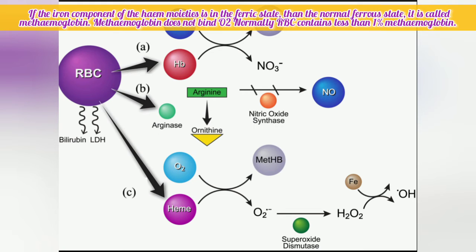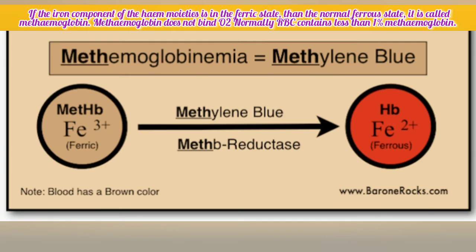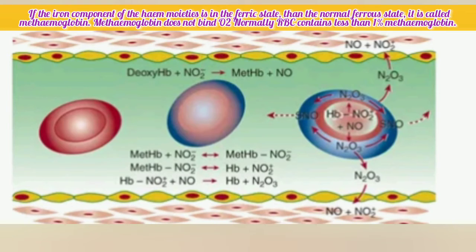There is a specific pigment in methemoglobin called hematoistabase, which exists in a normal state and is located in RBC cells. Methemoglobin is less than one percentage and helps with gaseous exchange.